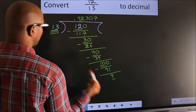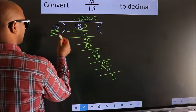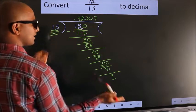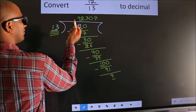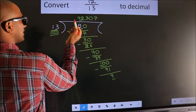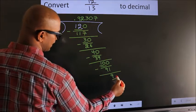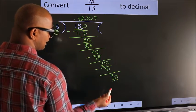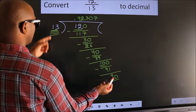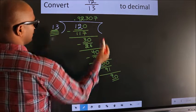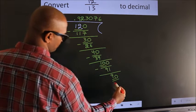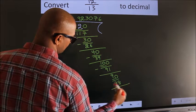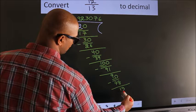Here we have 9, here 13. 9 is smaller than 13. And we already have the decimal, so we can directly take 0. So 90. A number close to 90 in the 13 table is 13 sixes, 78. Now we subtract. We get 12.